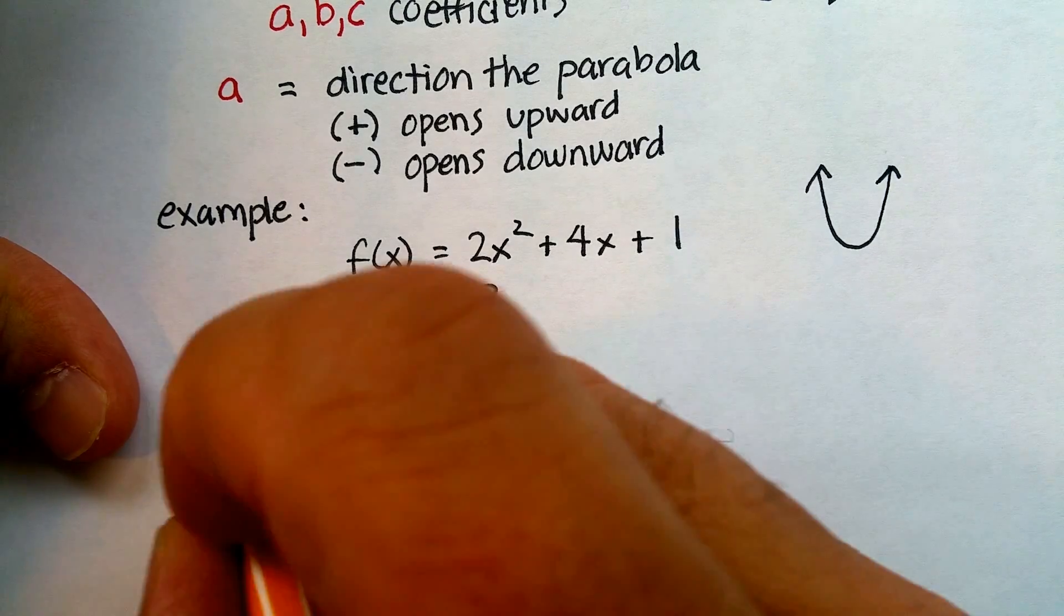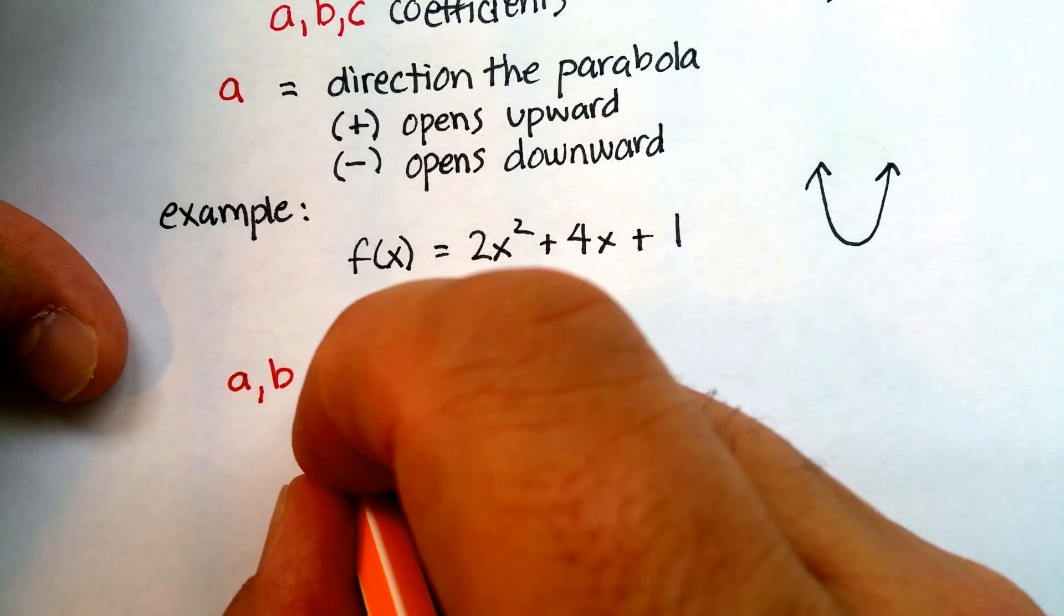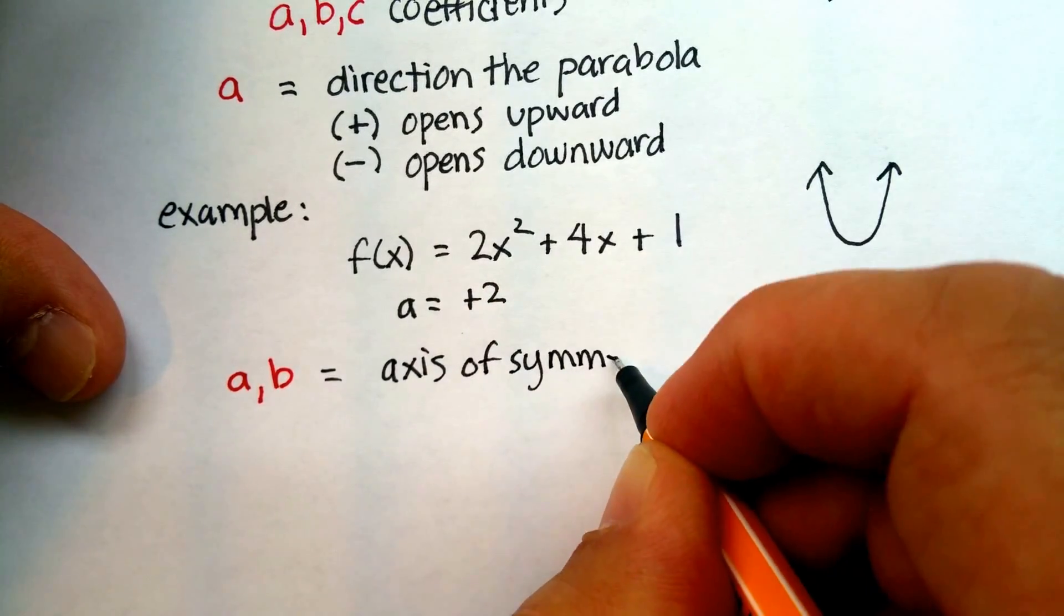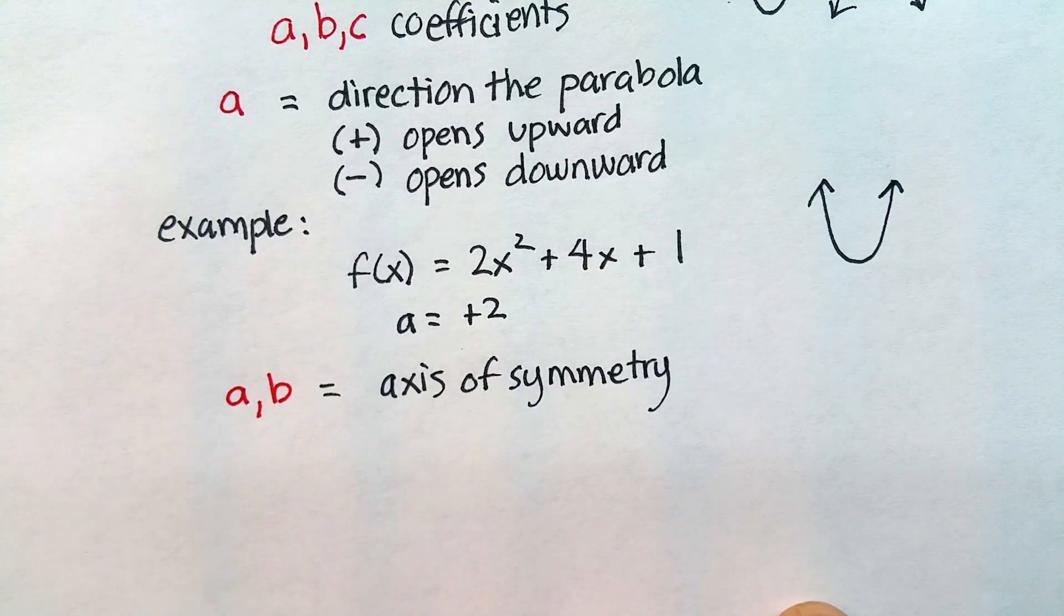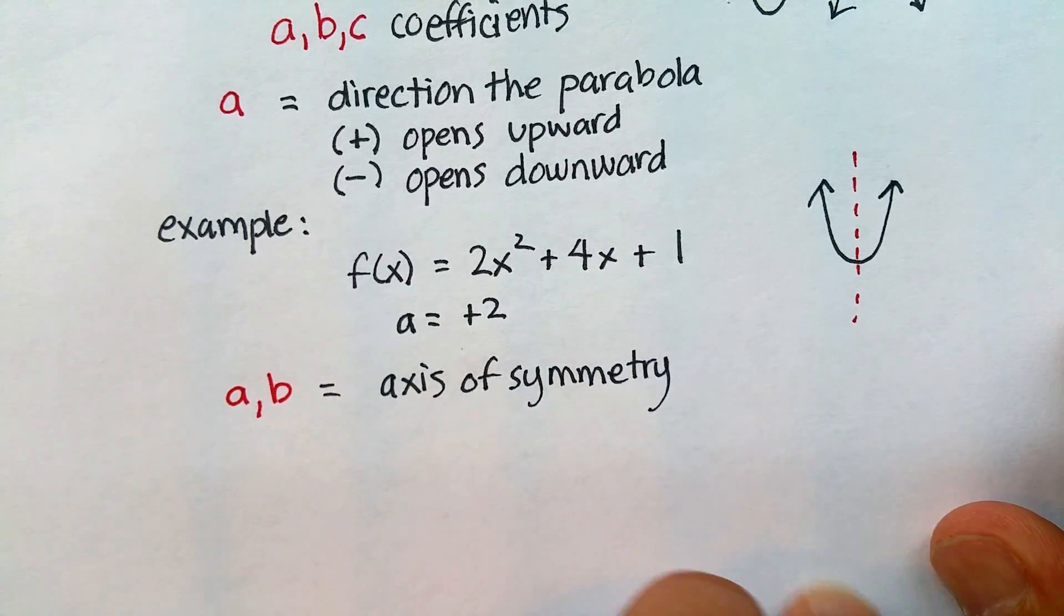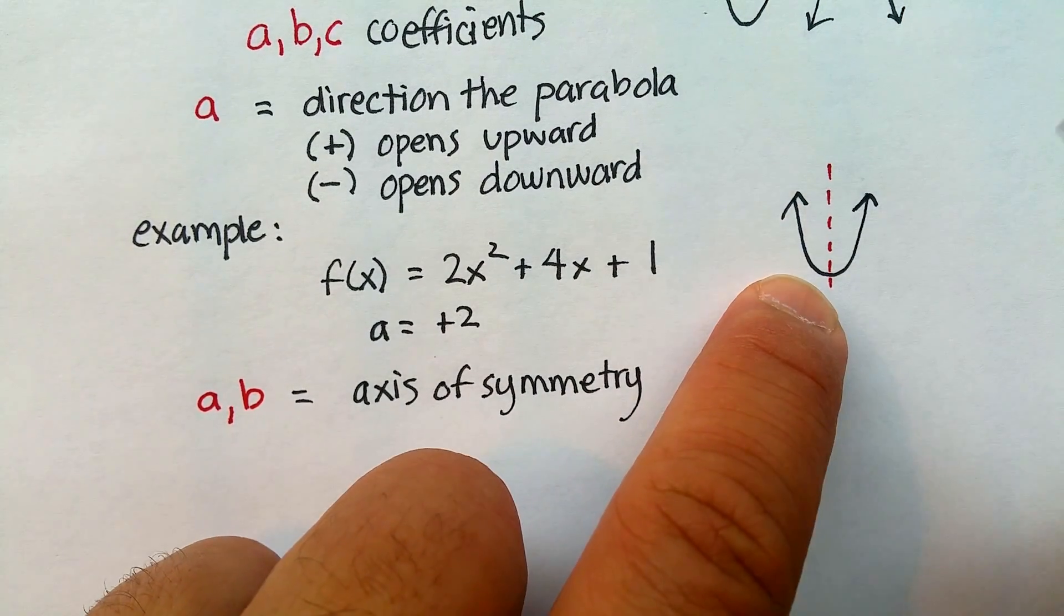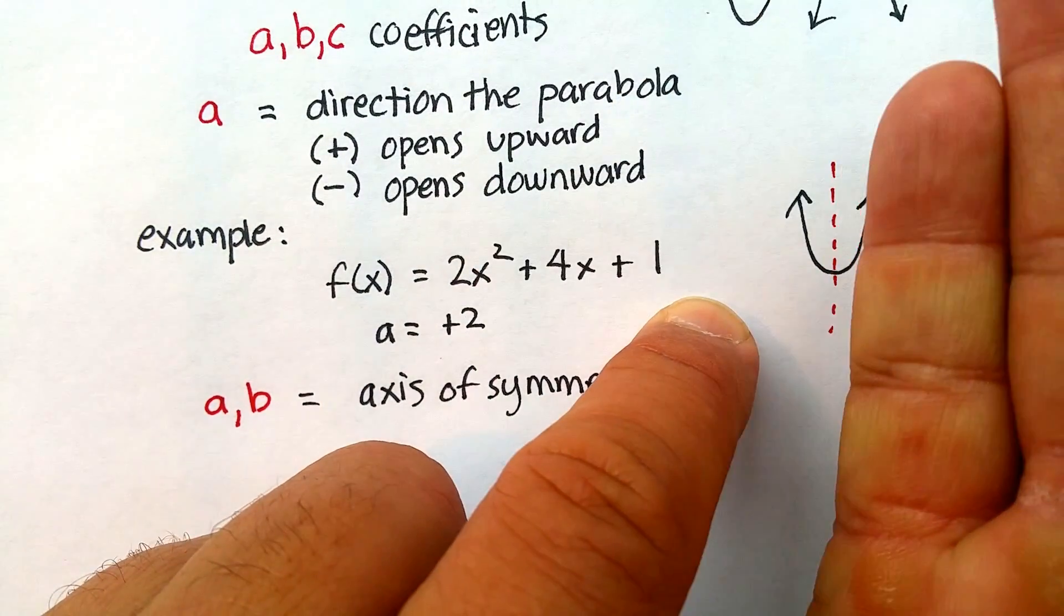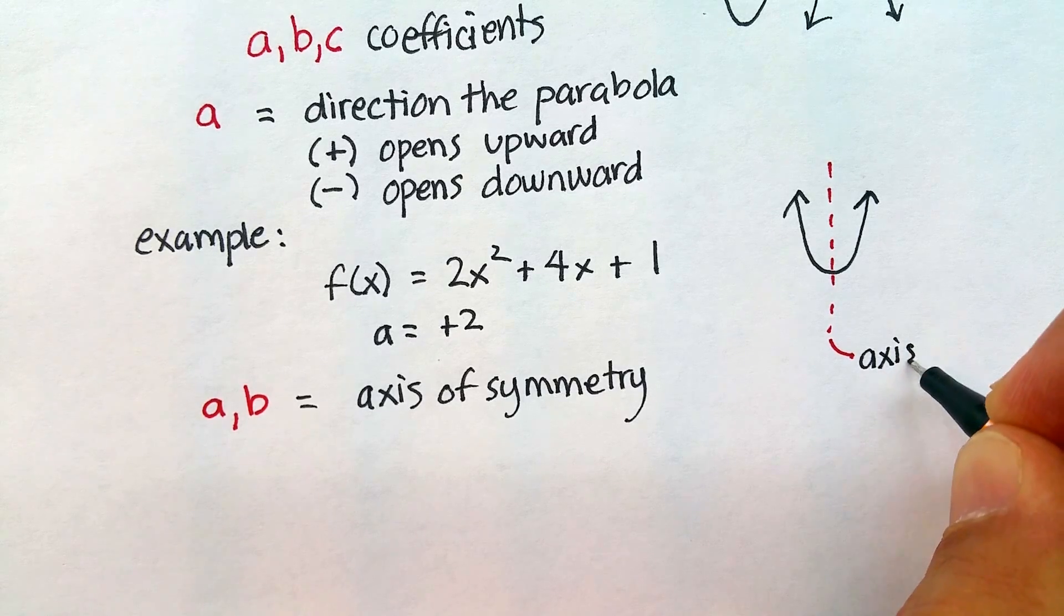Now, more information. The a and the b together can tell me what's called the axis of symmetry. Now, what is the axis of symmetry? Remember, one of the things that we talked about in terms of a parabola is that you can actually cut it exactly in half. And, that one side of the parabola is a mirror image. You just took it and you just pivoted on that axis. Flip it like that. This flips over to become this. This area where you actually do the pivoting is called the axis of symmetry. That's an important term.